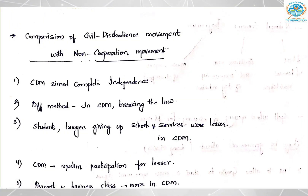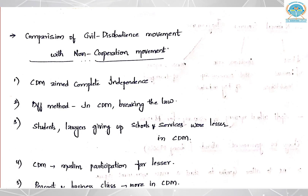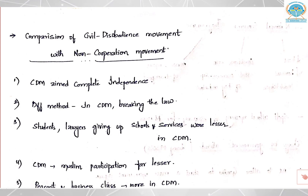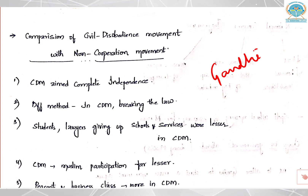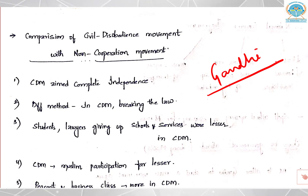In the last class we saw how the civil disobedience movement had stopped. The first round table conference happened where Congress did not participate. So Lord Irwin made a pact with Gandhi, known as Gandhi-Irwin Pact or Delhi Pact, in which most of the demands from Gandhi were accepted. So Gandhi as a leader withdrew the civil disobedience movement.